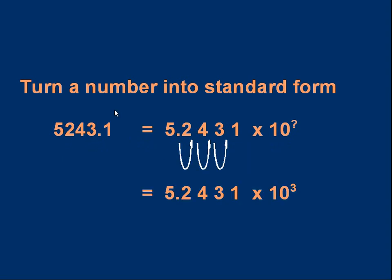Let's make it easier by using arrows. To multiply by 10 we simply move the decimal point one place to the right. So if I move it once I get 52.431, move it again 524.31, move it again 5243.1 — and I'm back at the original number. I had to move the decimal point three times to the right, which means the value in standard form is 5.2431 times 10 cubed. Pause the video to make sure you understand.